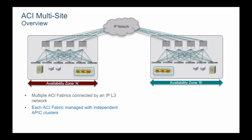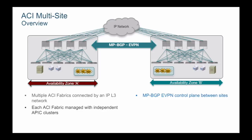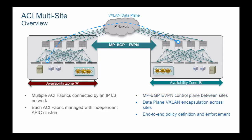In ACI multisite, each site is a separate independent ACI fabric managed with independent APIC clusters, making each site a separate availability zone. BGP EVPN is used as the control plane protocol between sites for advertising endpoint reachability, and VXLAN is used as the data plane protocol for carrying tenant traffic and policy information across sites. BGP EVPN and VXLAN are used in both multipod and multisite to provide layer 3 and layer 2 extension, simplifying IP network configuration by removing the need for other data center interconnect technologies such as layer 3 VPN or OTV.